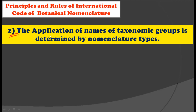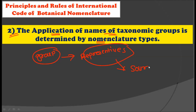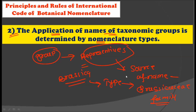The second principle is that the application of names of a taxonomic group is determined by nomenclature types. In a group there are certain representative species which act as a source of name for that group. For example, Brassica is the type for the Brassicaceae family. So the second rule is that the application of names of a taxonomic group is determined by the nomenclature types.